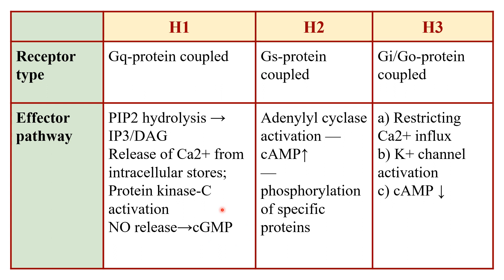The released nitric oxide diffuses to nearby smooth muscle cells, increases cyclic GMP, and causes relaxation or dilation of blood vessels. H2 receptors, coupled to Gs protein, enhance cyclic AMP accumulation, activating phosphokinase A, causing protein phosphorylation and vasodilation. H3 receptors, coupled to Gi and Go proteins, work by decreasing calcium influx through G-protein coupled N-type calcium channels, activating potassium channels and reducing cyclic AMP. H4 receptor effector pathway is similar to H3.